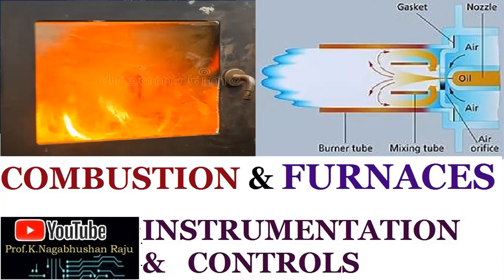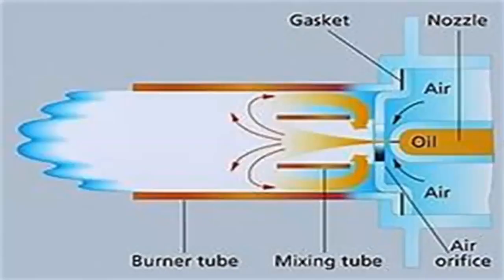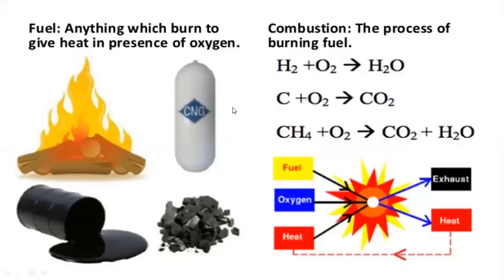Let's try to understand the combustion process first, because that's all what happens inside the furnaces, resulting in the development of enormous heat. If you see the typical principle of a burner, you have oil coming through a small nozzle in the pipe. Surrounding the annulus, you have the air coming through the blower, and here the air and fuel are getting mixed, and thereby with the ignition you are getting the heat and the flame. So a burner is nothing but a fuel and air mixture in the right proportion.